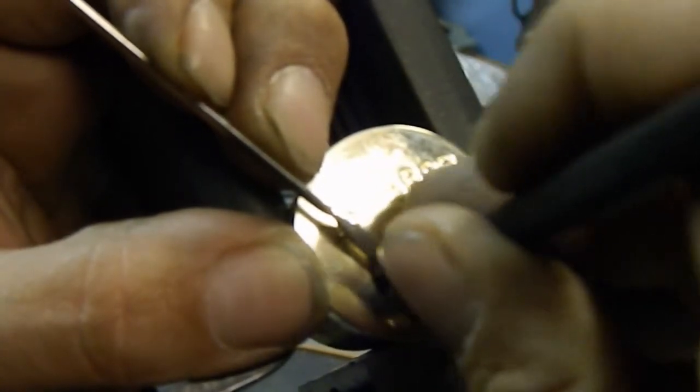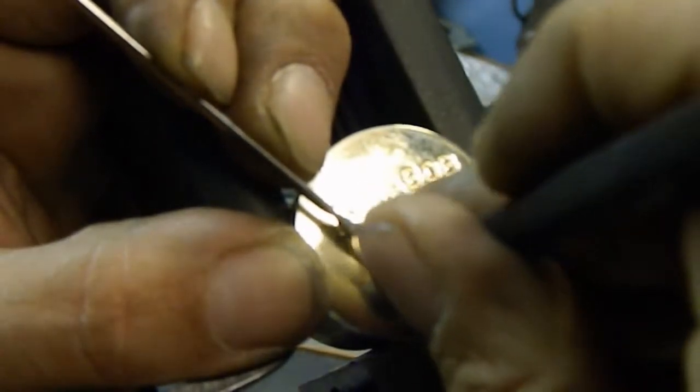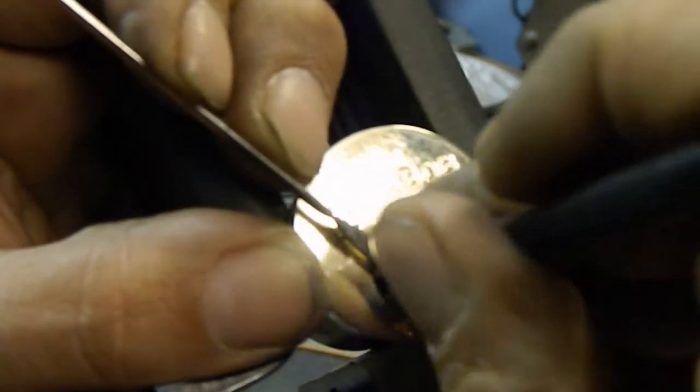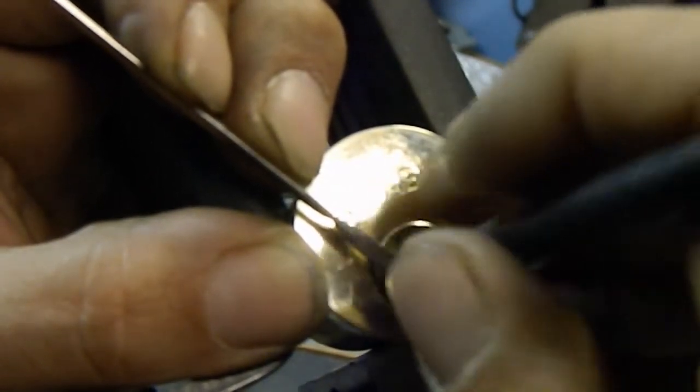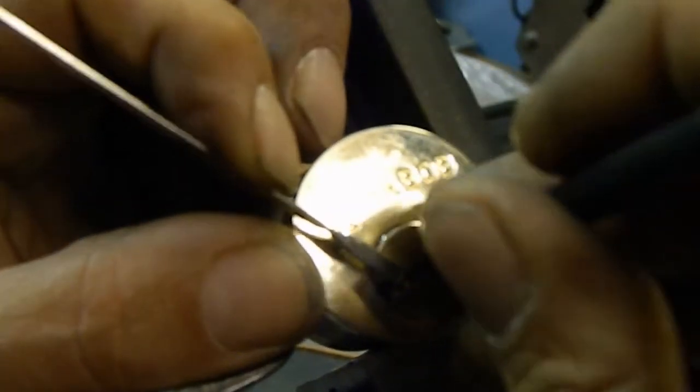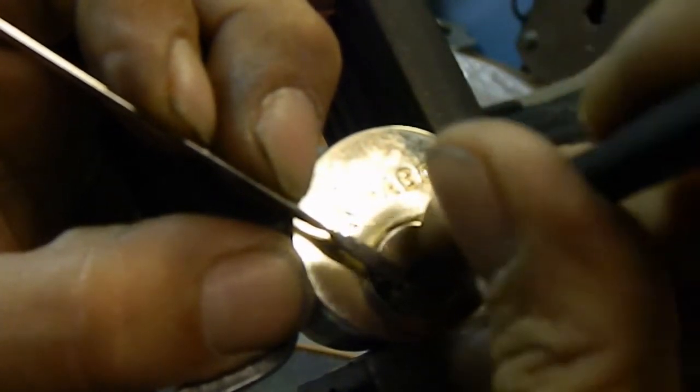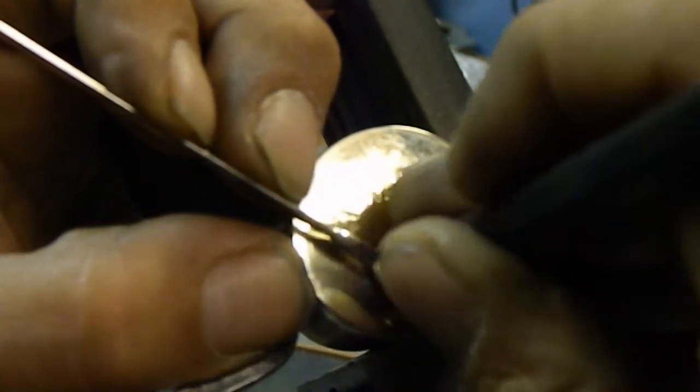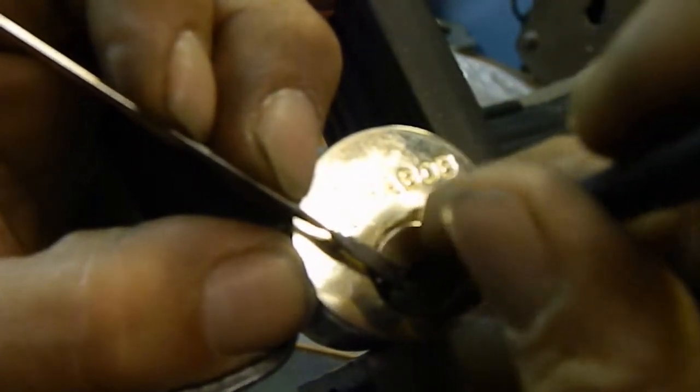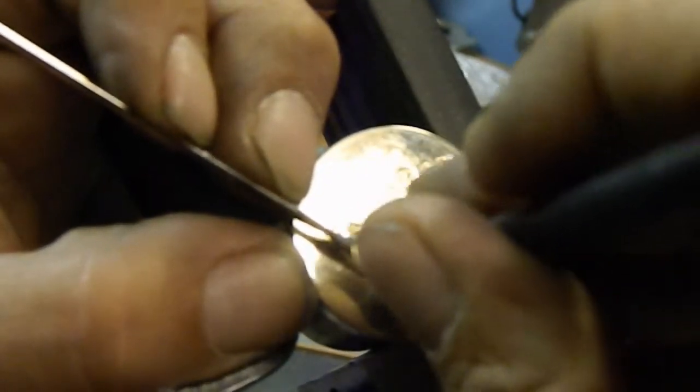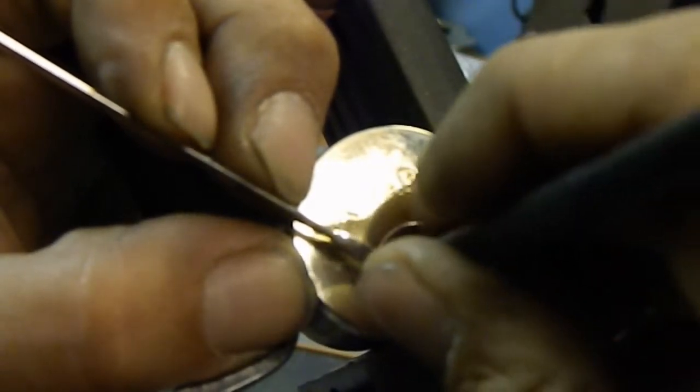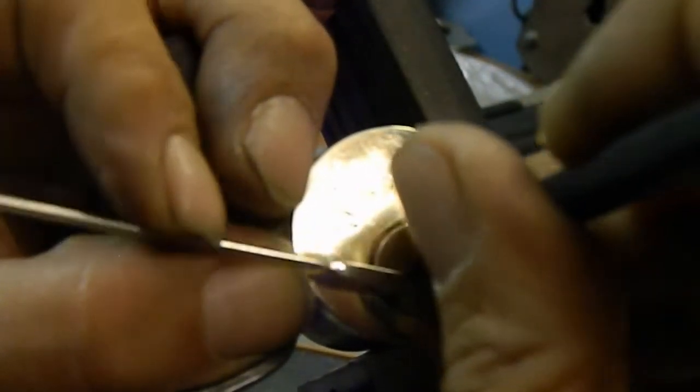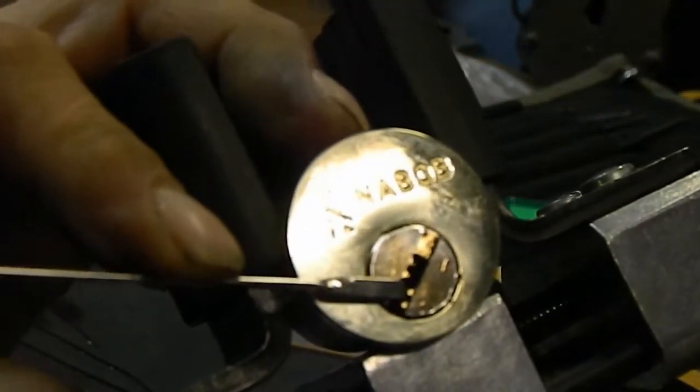Let me see if maybe I'm binding something I shouldn't be. I'll lighten up on my tension a little bit. Oh, there was a little bit on pin one. Oh, it feels like a little bit on four. Oh hello. No, I'm not picked. I did get a good false set though. Okay, it was pin two and it opened.